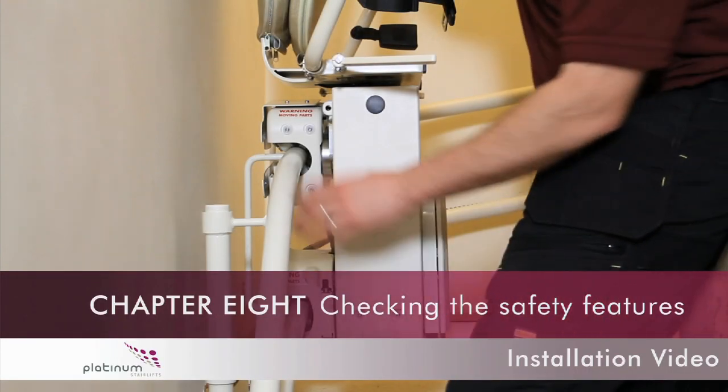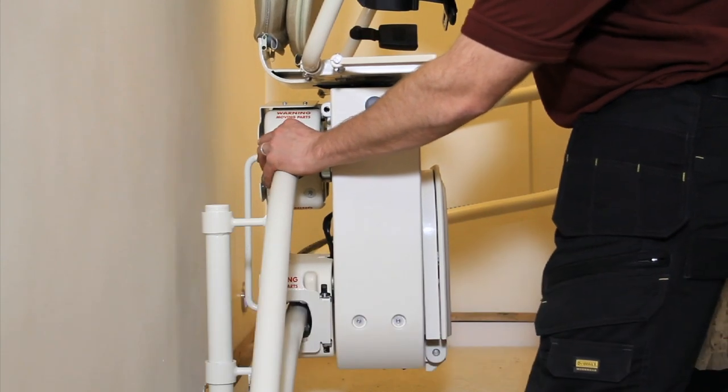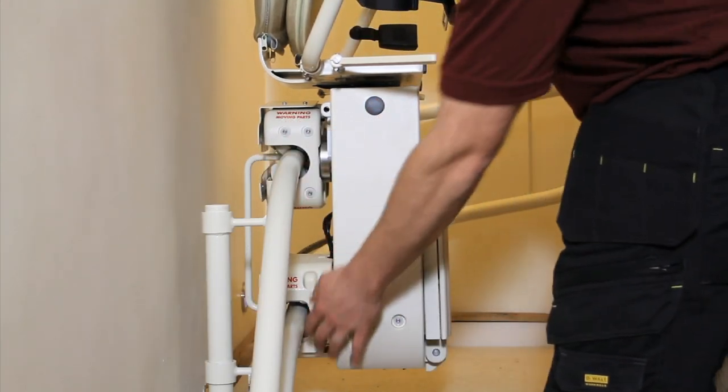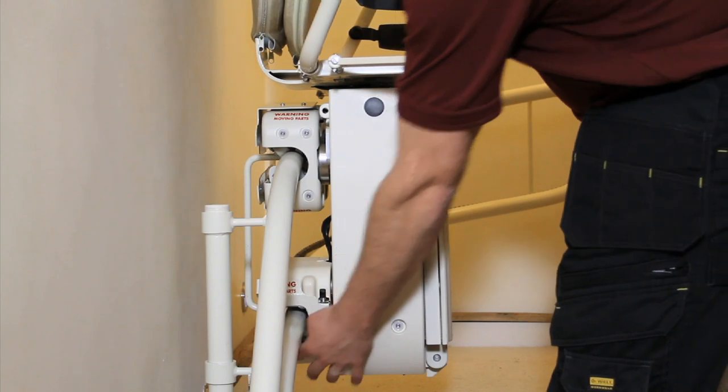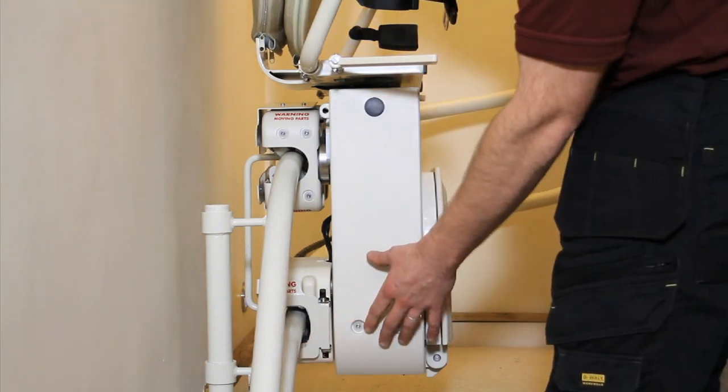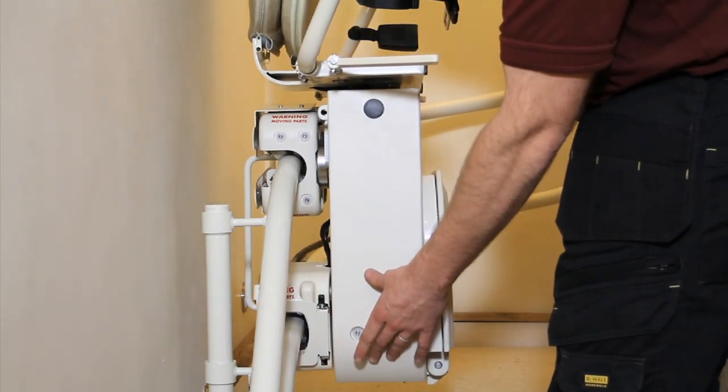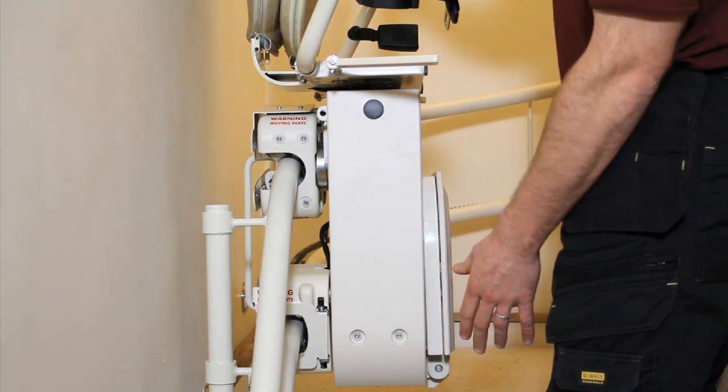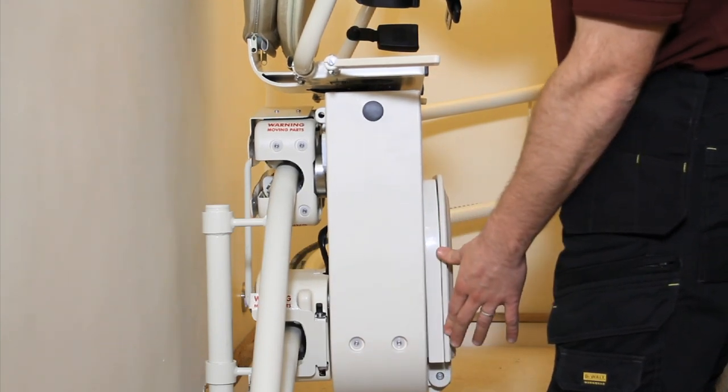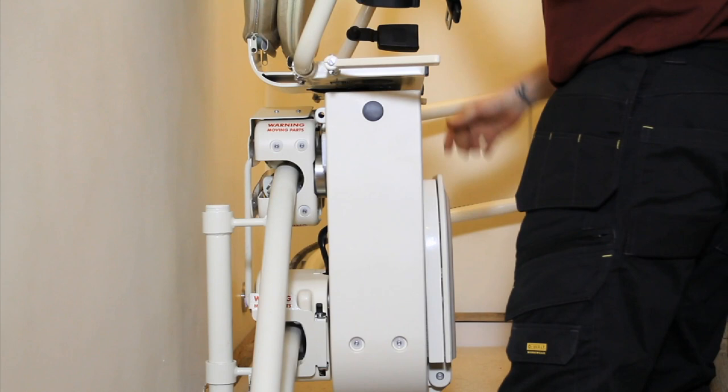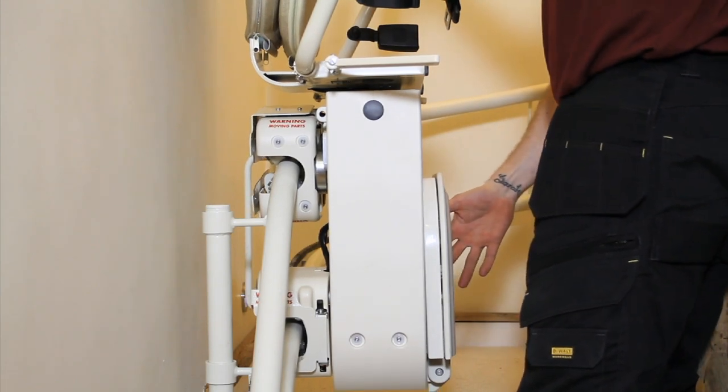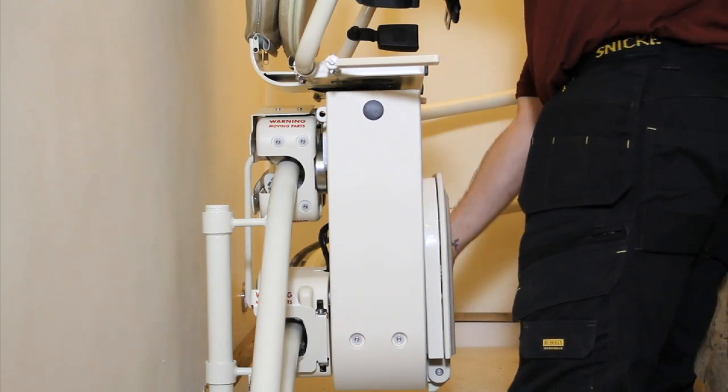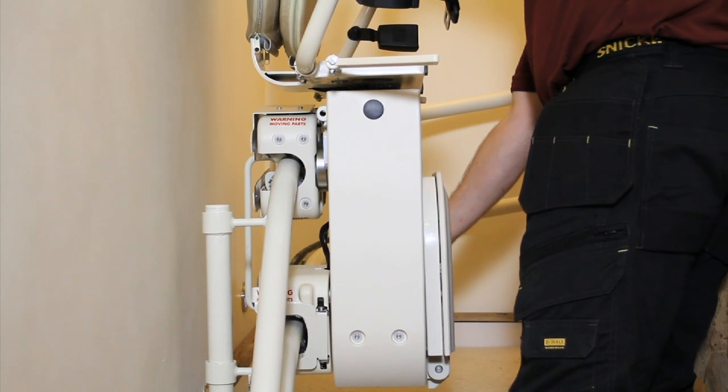Chapter 8: Checking the safety features. Move the carriage to a suitable position on the staircase in order to fully test all of the safety features. Firstly, check that all downside safety edges are working correctly. These consist of the top and bottom skates, side cover and footrest. Now, repeat these safety checks once again, checking that all of the equivalent upside safety edges are also working correctly.